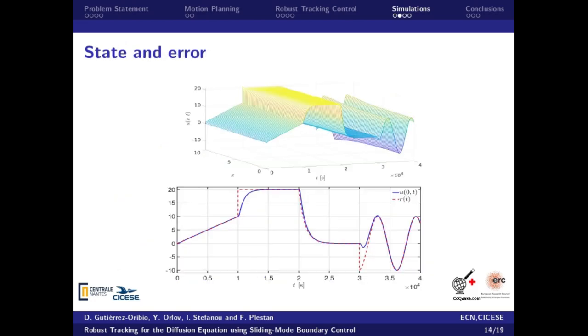The tracking over the four types of references is obtained, showing how the diffusion equation state is forced to follow the reference profile over all the space variable.